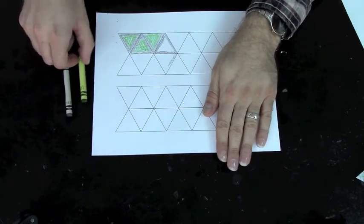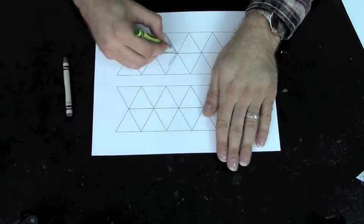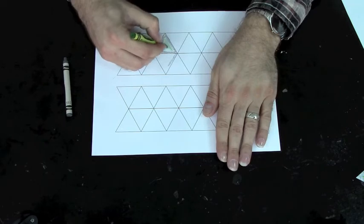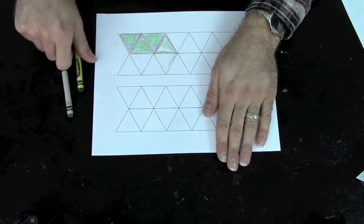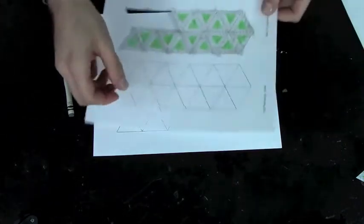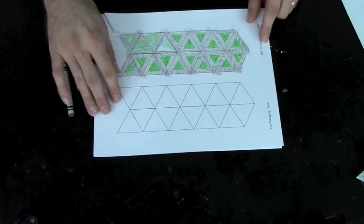First grab your crayons or markers and begin to color your triangle template. Viruses try to make each piece of their armor identical. It's much easier to repeat a pattern than it is to come up with new ideas each time.